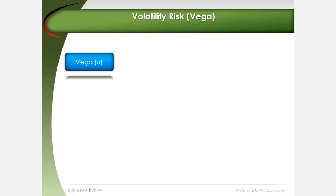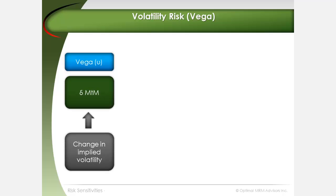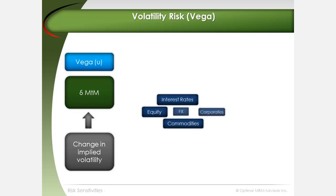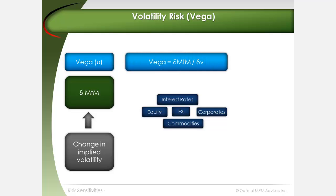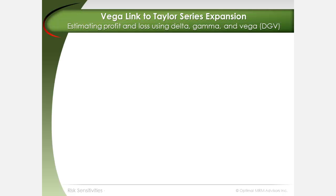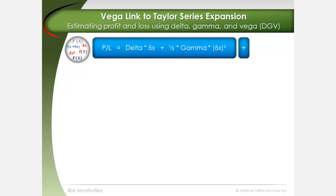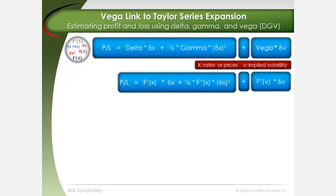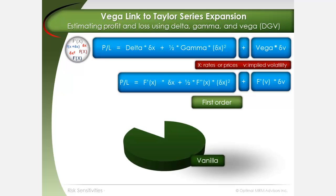Volatility risk, or vega, represents the change in position mark to market in response to changes in implied volatility of interest rate, equity, commodity, and foreign exchange markets. For all asset classes, vega is equal to delta mark to market divided by delta V, where delta V represents the change in implied volatility of the underlying asset. We can add a vega sensitivity expression using the Taylor series expansion to continue building the investment's P&L equation. Like delta, vega is considered a first order Greek. For most products traded at financial organizations, higher order Greeks are not commonly required, except for a small proportion of specialized trades.